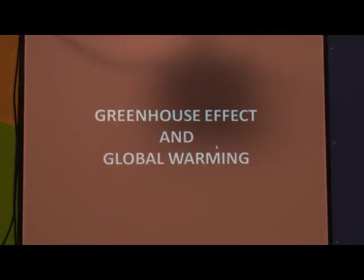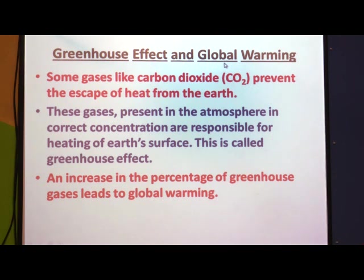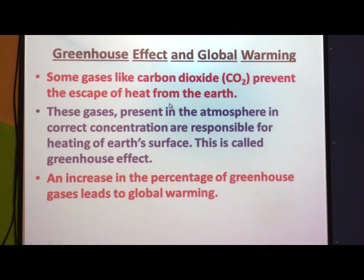Now let us discuss greenhouse effect and global warming. Some gases like carbon dioxide prevent the escape of heat from the earth — CO2 is one of the greenhouse gases, it traps the heat of the sun and prevents heat from escaping. These gases present in the atmosphere in correct concentration are responsible for heating of earth's surface, which is called the greenhouse effect. Greenhouse effect is a desirable effect as long as the gases are in correct concentration — not too high and not too low.